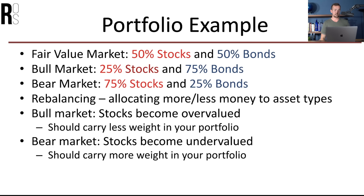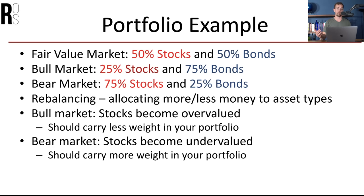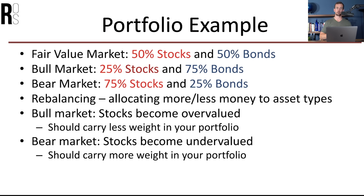Rebalancing means allocating more or less money to asset types. During a bull market, stocks often become overvalued, so they should often carry less weight in your portfolio if you're looking to mitigate some of that risk. On the other hand, in a bear market, stocks typically become undervalued, and at that point could often carry more weight in your portfolio, allowing you to have more upside. That's typically how people use stock and bond allocations — either leave it and rebalance once in a while, or based on overall market conditions, rotate more or less money in and out.